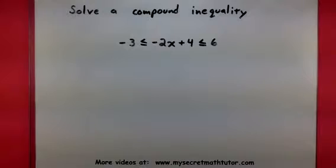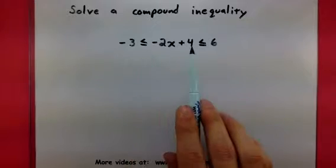Now when we go through the solving process, not much is going to change from just solving a normal inequality. The only thing I have to remember is that if I divide by a negative number or multiply by a negative number, I want to flip both of my signs.